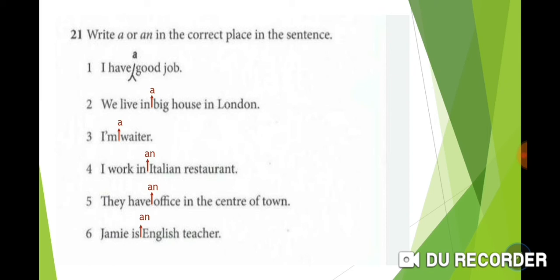Number 2: We live in a big house in London. Number 3: I am a waiter. Number 4: I work in an Italian restaurant. Number 5: They have an office in the center of town. Number 6: Jamie is an English teacher.